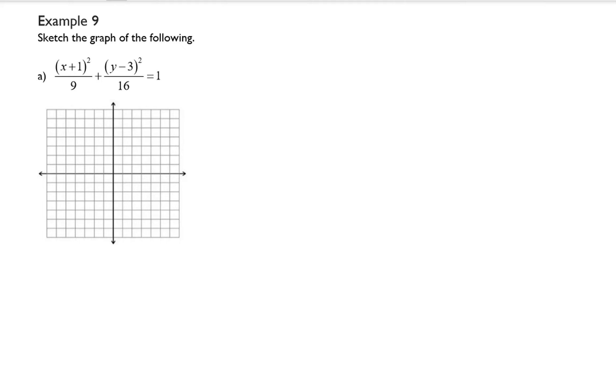So this is an example of an ellipse. And we want to identify the center of the ellipse and the center is going to be at h which in this case is -1, comma k which in this case is 3. So I'm going to go ahead and plot that on my grid. So here's my y-axis. Here's my x-axis. (-1, 3) is right there.